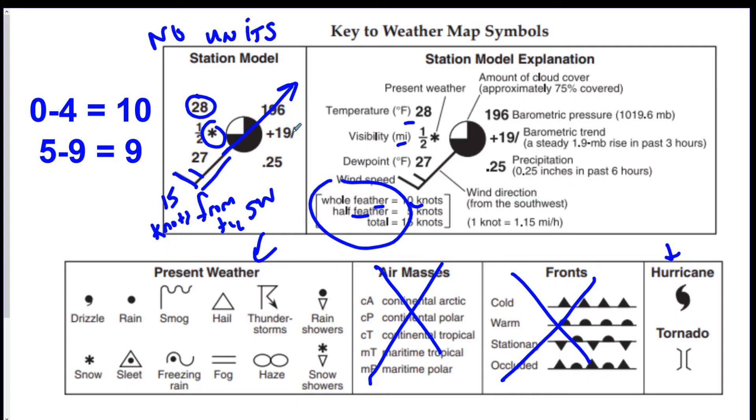The pressure we're going to leave that for last. That's in the top right. This barometric trend is how much the pressure is either going up or going down in the last three hours. So in this case we said plus and they take away the decimal. If you look over here, so this would be a plus one point nine millibar increase in the last three hours.